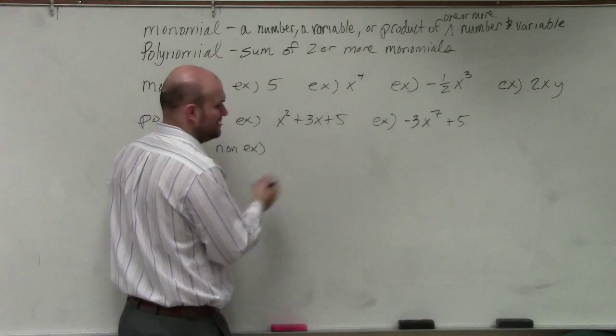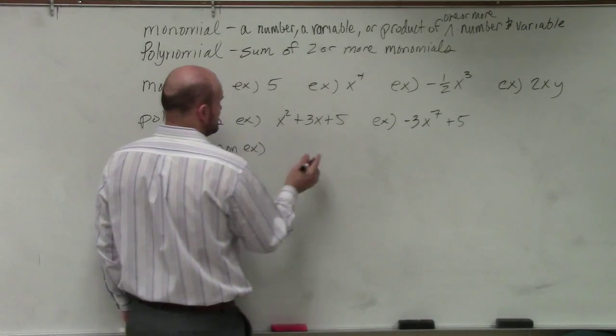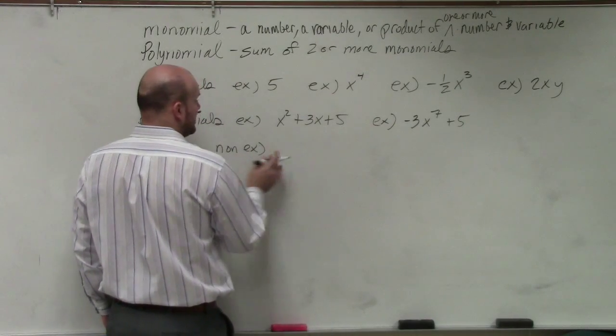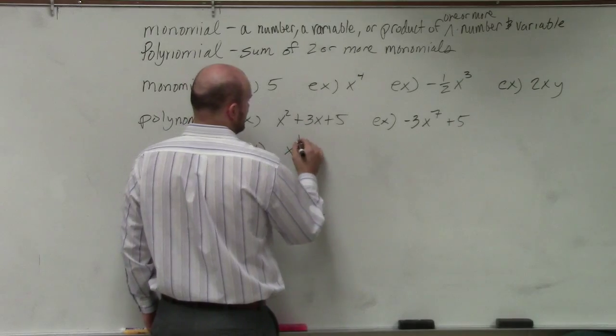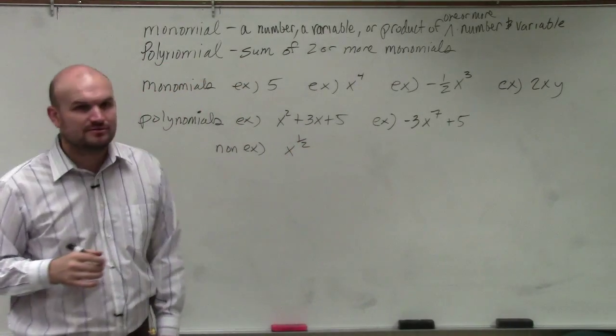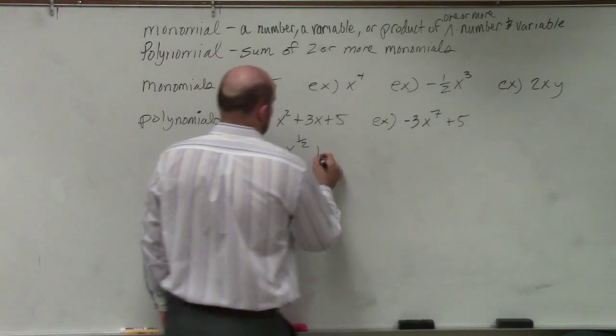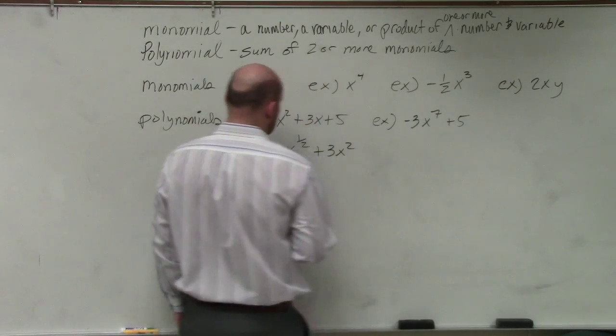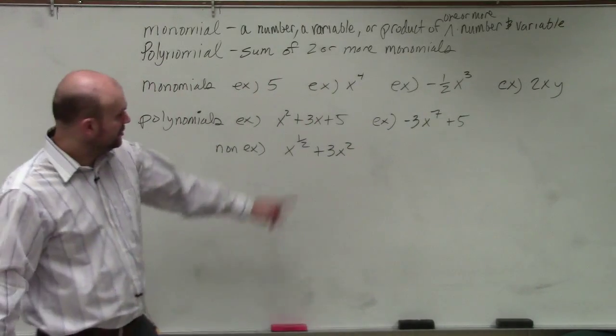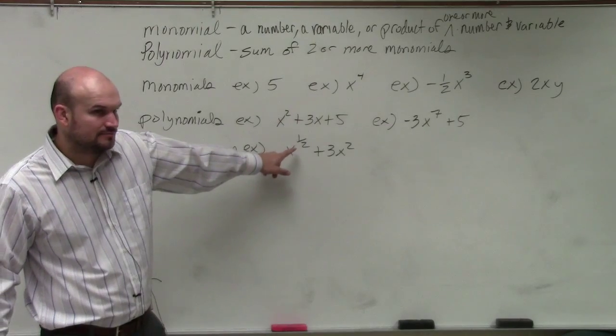So a non-example, I don't even see this in your homework, but it's good to have in your notes. Your powers cannot be rational. Therefore, x to the 1/2 plus 3x squared, that's not a polynomial. You cannot have that to the 1/2 power.